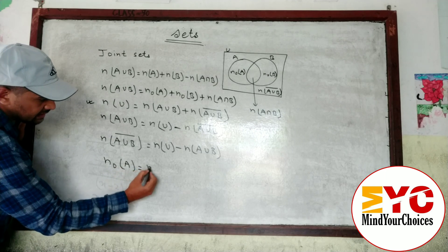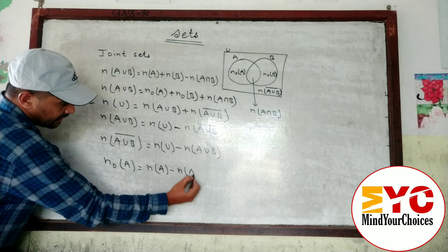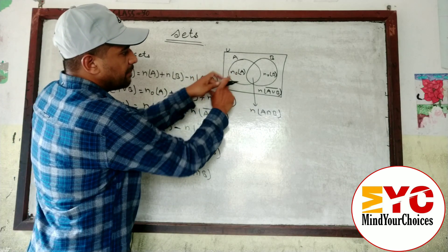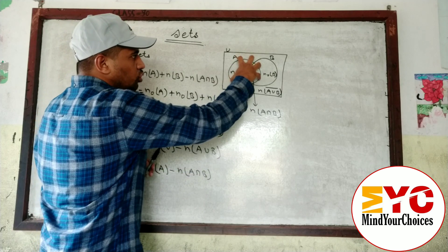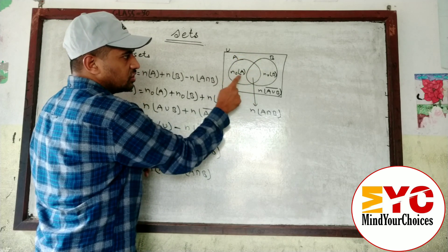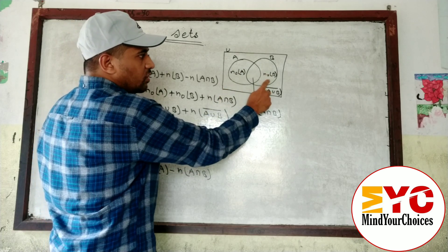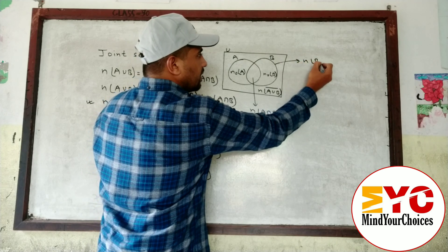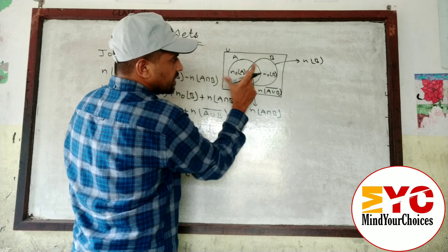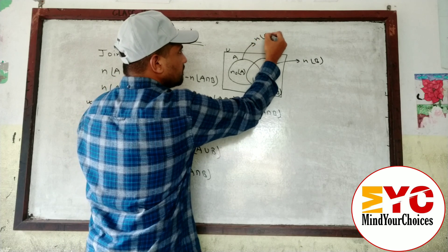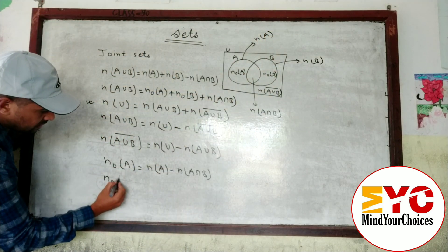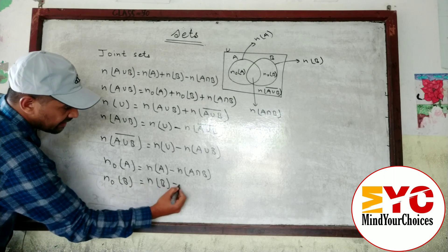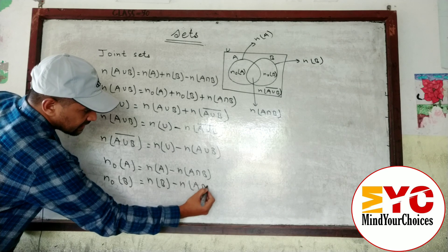Now for n(only A): the formula is n(only A) equals n(A) minus n(A∩B). To find just the n(only A) part, from the total of A we subtract the intersection. Similarly, for n(only B): n(only B) equals n(B) minus n(A∩B). From n(B) we subtract the intersection to get n(only B).